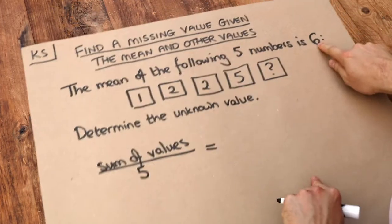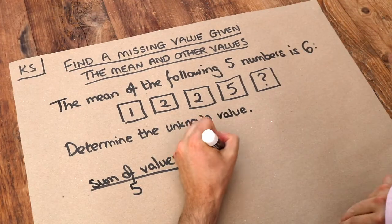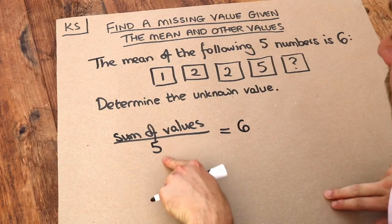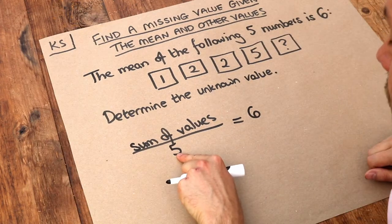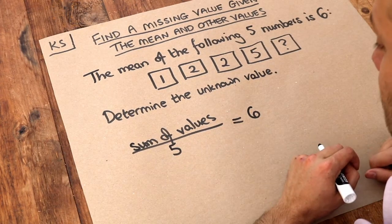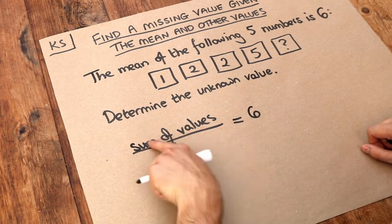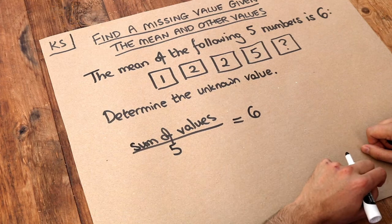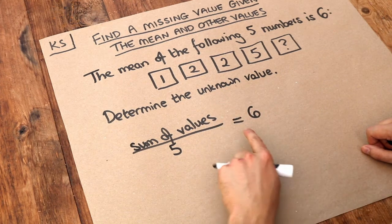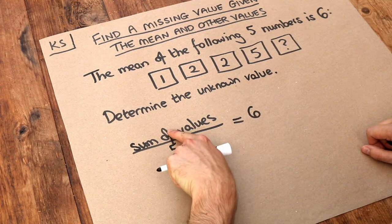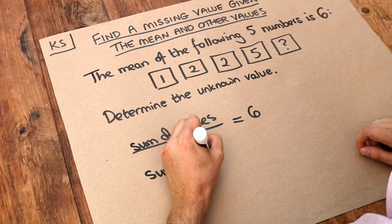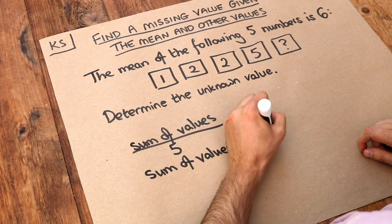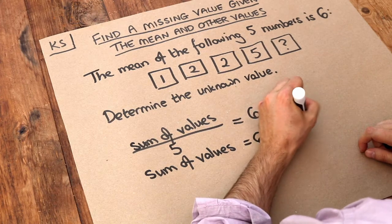But we know what the mean is, it tells us that the mean is 6. So when we add up the values, we divide by how many there are, five numbers, we get a mean of 6. So let's think backwards. What number divided by five gives us 6? Well it's clear, isn't it? It's just going to be 6 times 5 will give us the sum of the values. So we know that the values add up to 6 times 5, which is 30.